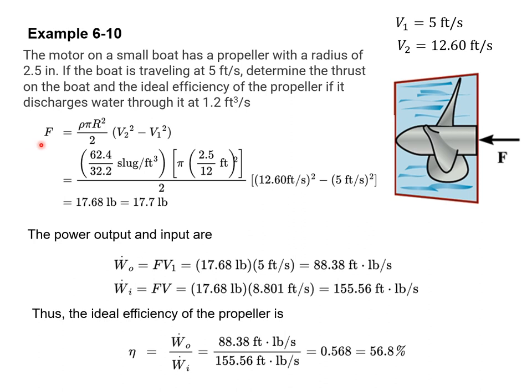Finally, we can find the thrust, which is given by the following equation. We can plug in the density. We're told what the radius is, so it's pi r squared, 2.5 inches. V2 is 12.6 feet per second, we square that minus 5 feet per second squared, so we get 17.7 pounds.